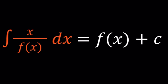Hello everyone. In this video we're going to be solving a differential equation. Now why do we call this a differential equation even though we have the integral of something? Because this is going to turn into a differential equation. We have the integral of x over f of x dx, where f of x is a function of x, and that is equal to f of x plus c. Since this is an indefinite integral, we do have a constant c in the answer.